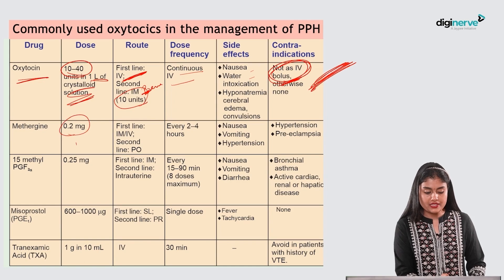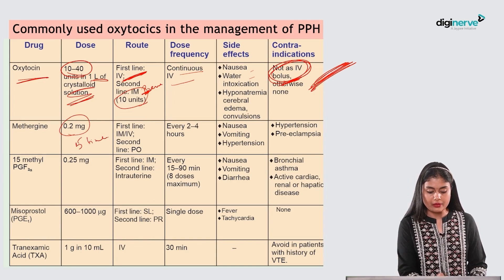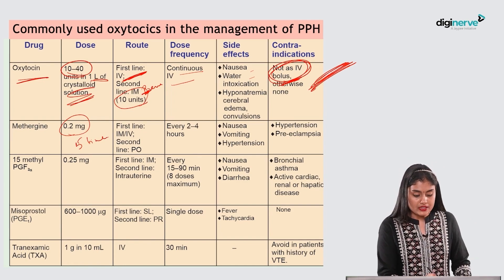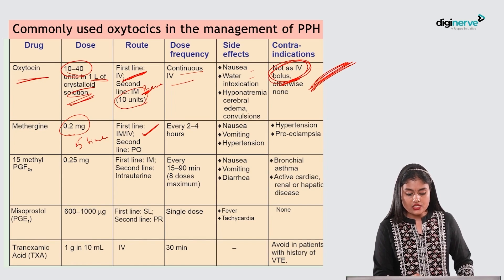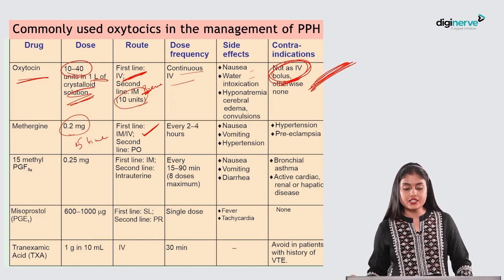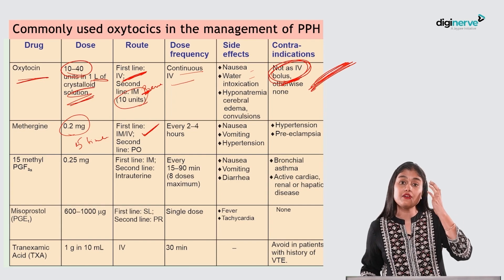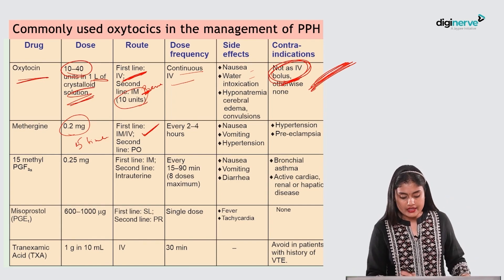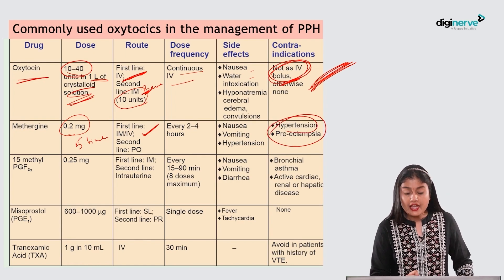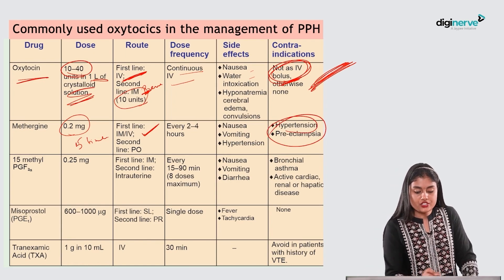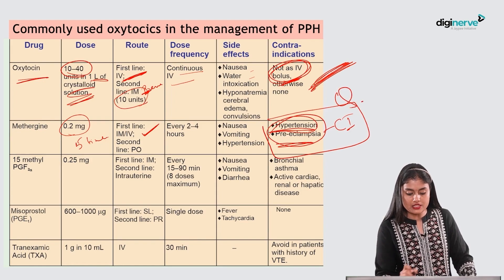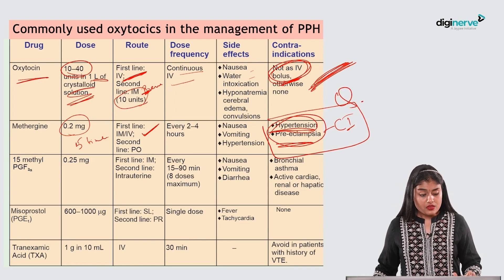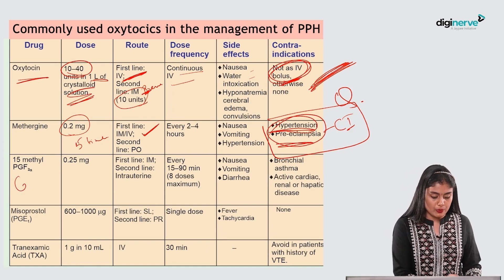Methylergometrine dose is 0.2 mg, given up to five times every 20 minutes. It is first-line IM or IV for treatment. Side effects include nausea, vomiting, and hypertension. It is contraindicated in hypertensive patients and preeclampsia — this is a must-know point.